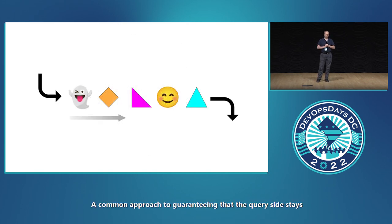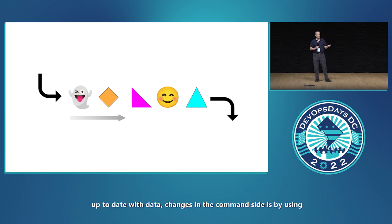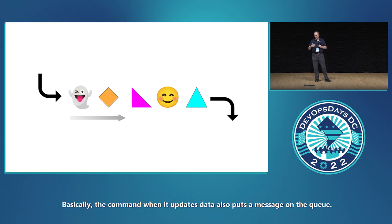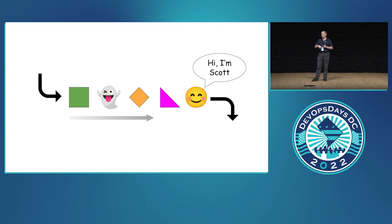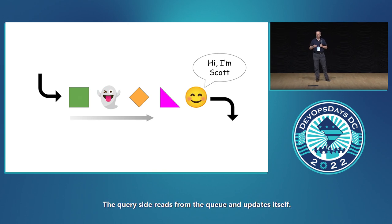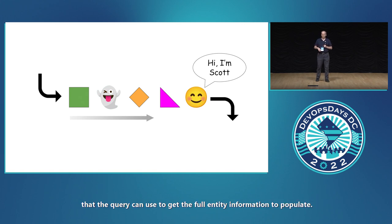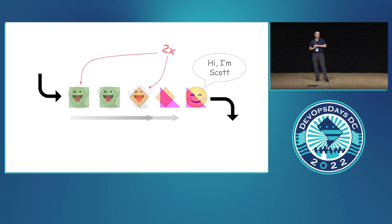A common approach to guaranteeing that the query side stays up to date with data changes on the command side is by using asynchronous events routed through a message queue. Basically, the command, when it updates data, also puts a message on the queue. This should be done transactionally so that the operations succeed or fail together. The query side reads from the queue and updates itself. The message should be pretty small and maybe contain a reference ID that the query can use to get the full entity information to populate.